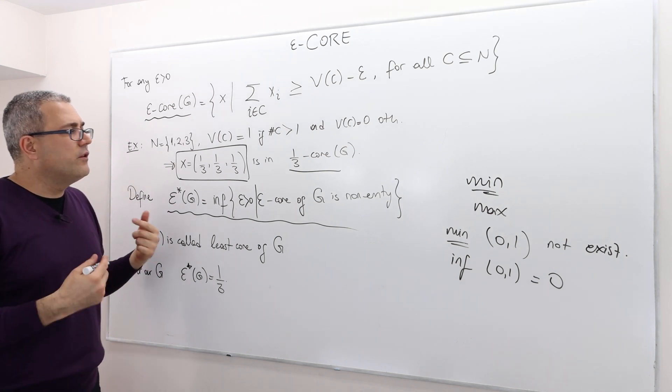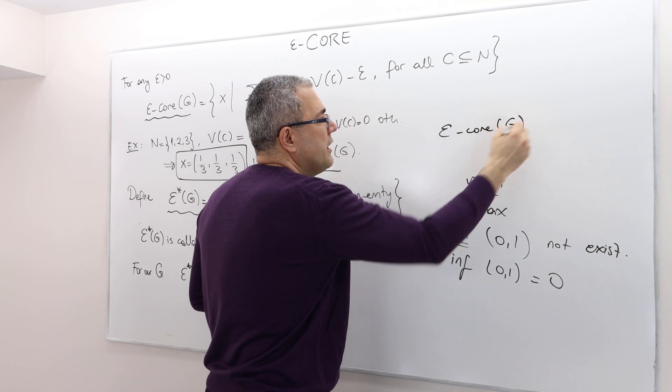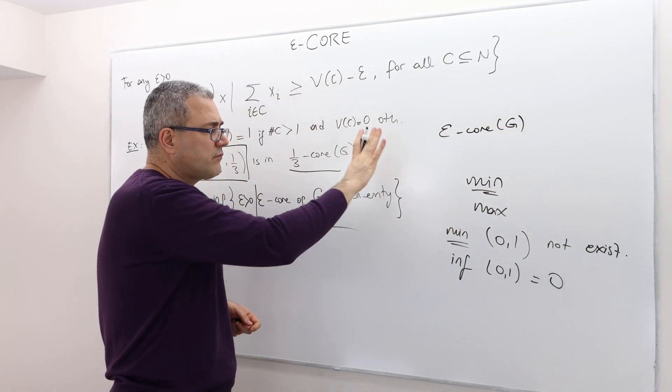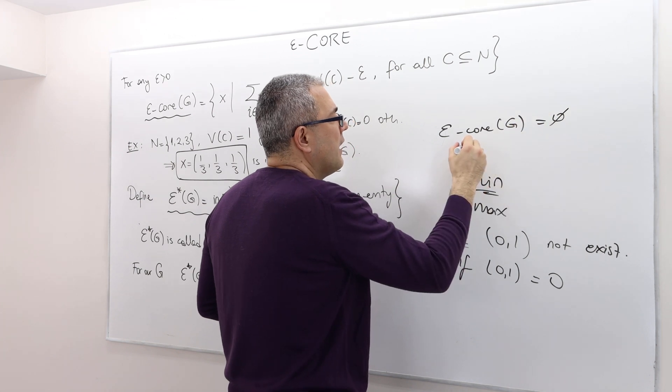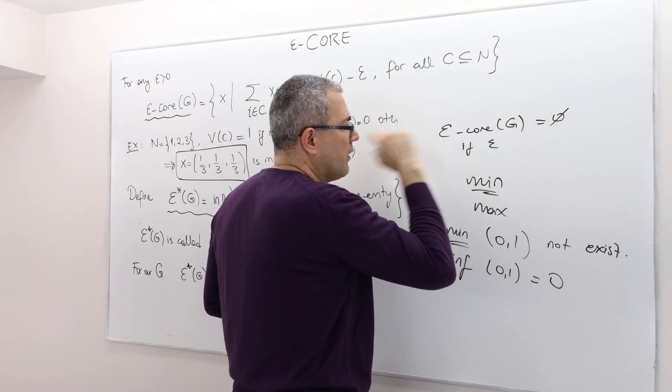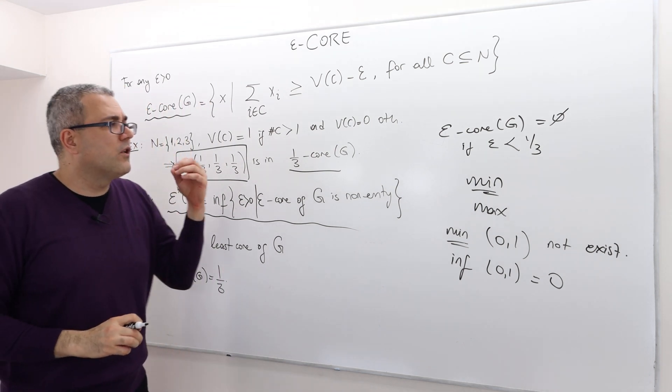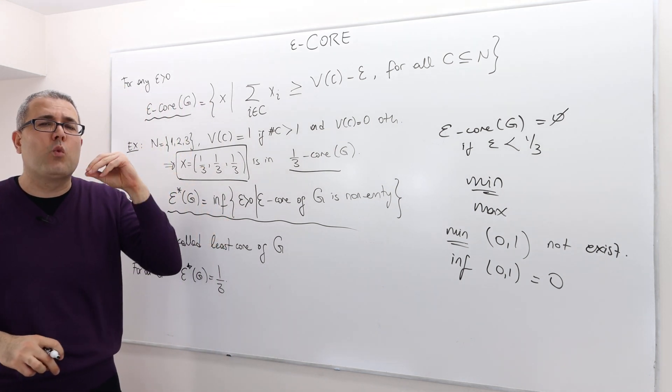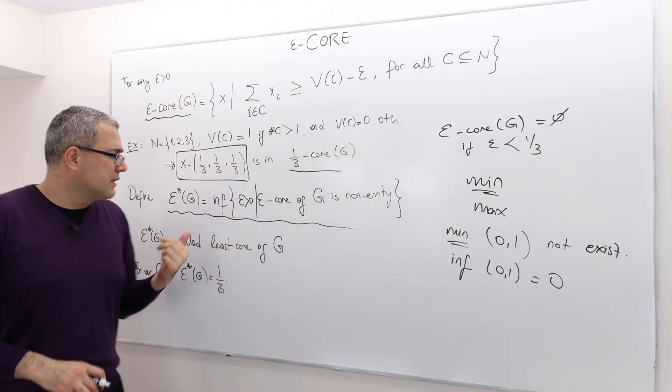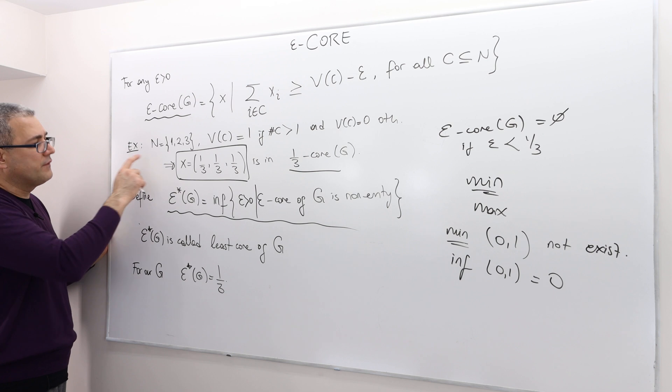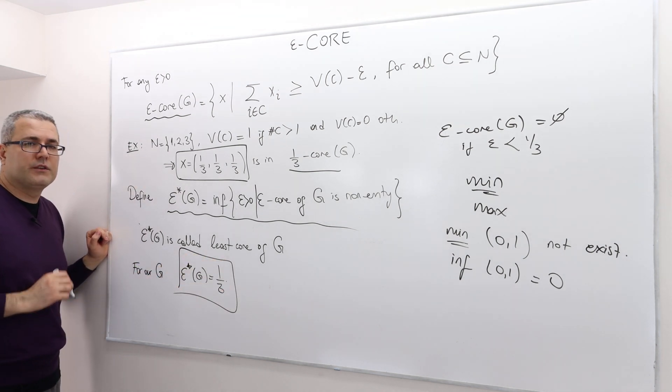And in fact, if you calculate any epsilon core of this game G, you'll see that all of those sets are going to be empty if epsilon is less than one over three. So epsilon has to be at least one-third so that epsilon core of G is non-empty. So that means, basically, for this game, epsilon star G is one-third.